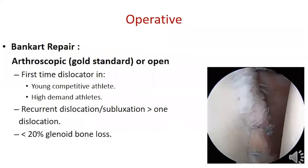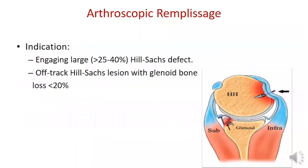For operative treatment of shoulder instability, the operation may address soft tissue or bony deficiency. Arthroscopic Bankart repair is the gold standard for Bankart lesions; it is indicated for first-time dislocation in young competitive and high-demand athletes, or in recurrent dislocation and subluxation with glenoid bone loss less than 20%. If there is an engaging Hill-Sachs lesion from 25 to 40%, arthroscopic remplissage is indicated, in which the Hill-Sachs defect is filled with the posterior capsule and infraspinatus.